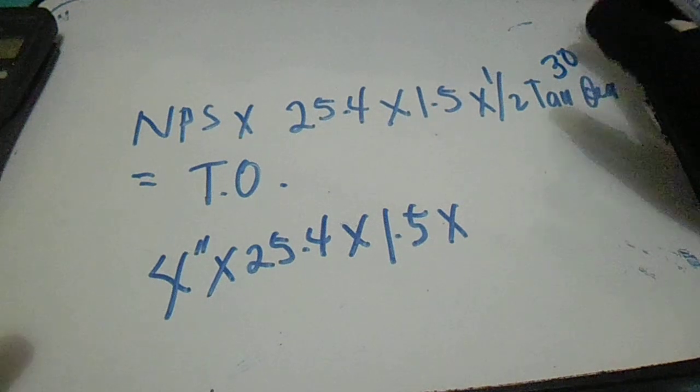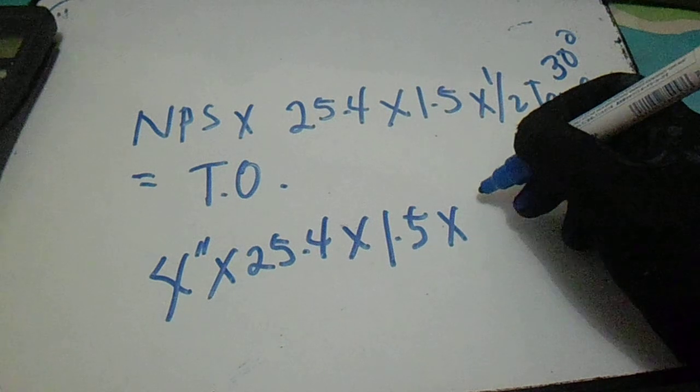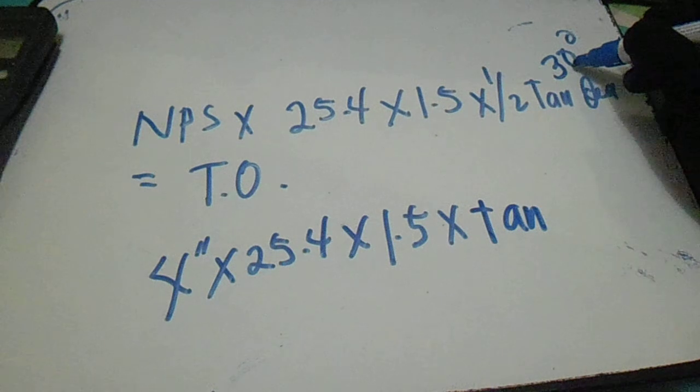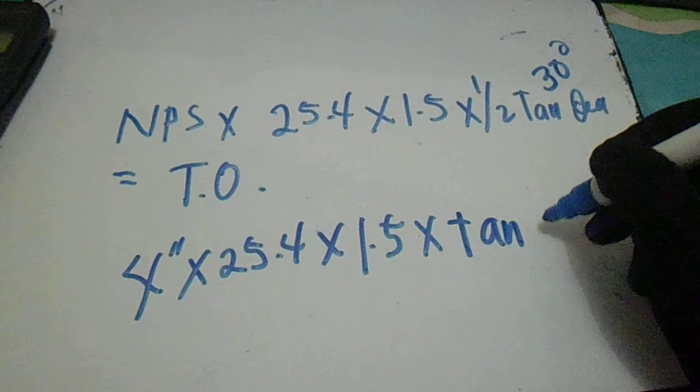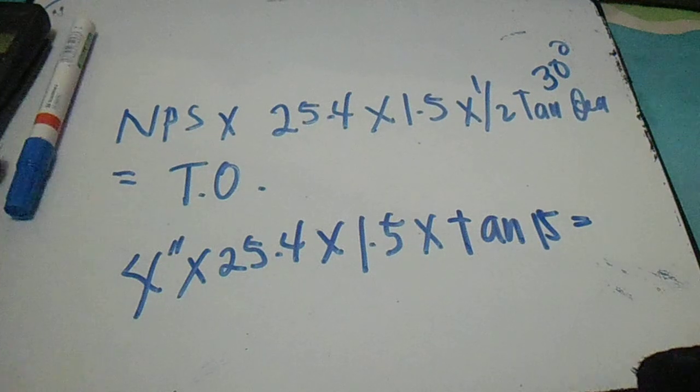We need to cut at 30 degrees, so we multiply by 1/2 tan. One half of 30 degrees is 15. Now let's compute this.